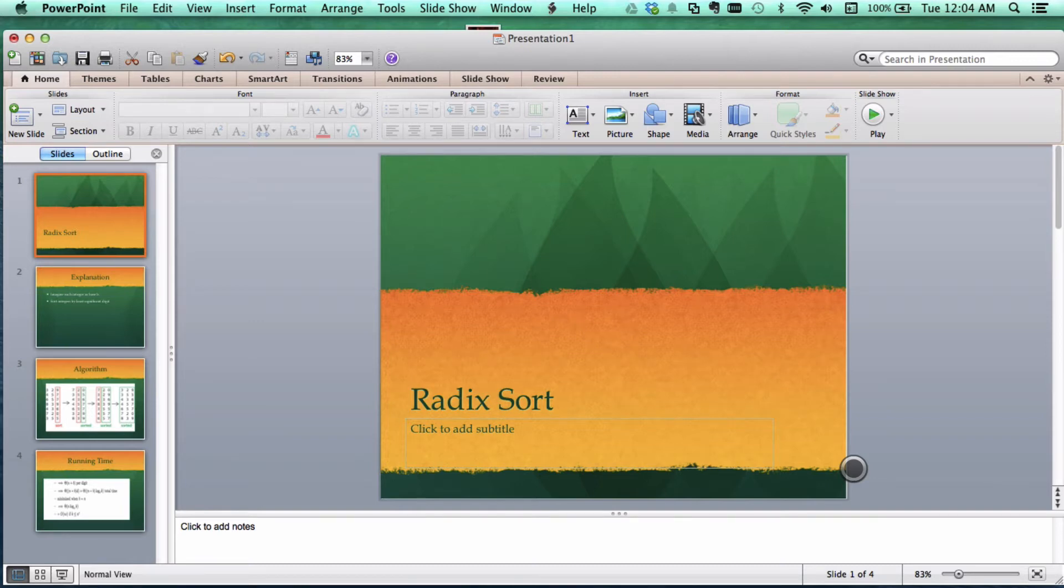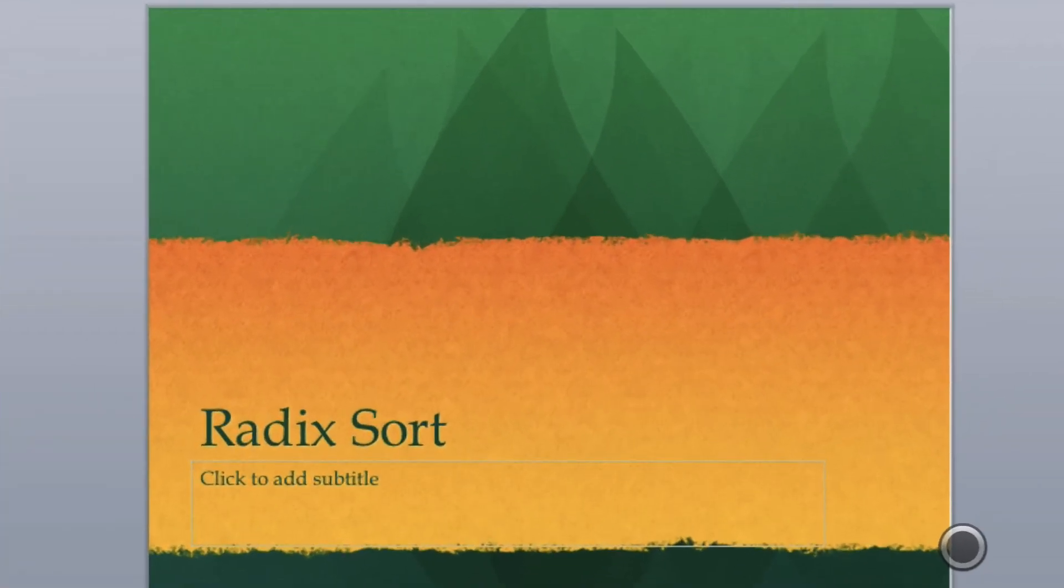What's Gucci everyone? Today I'm going to be going over radix sort. Radix sort is a cool sorting algorithm that allows you to sort integers in a really fast way.